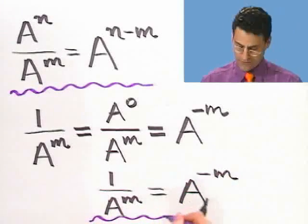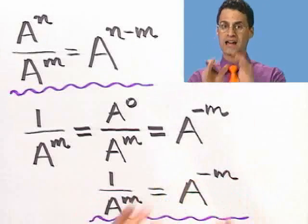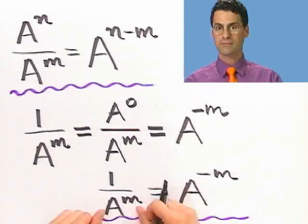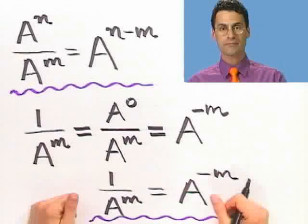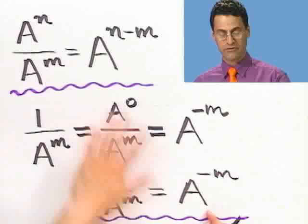We finally understand what a negative exponent means. We all know what a to the 5 means — it's a times a times a times a times a. But what would a to the minus 5 be? It means the reciprocal of a to the 5. So a to the minus 5 would be 1 over a, times 1 over a, times 1 over a, times 1 over a, times 1 over a. When you see negative exponents, that means you take a reciprocal. That's a really neat fact.